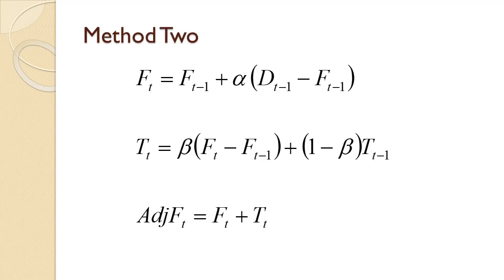With Method 2, the forecast and trend are both smoothed separately — thus the double exponential smoothing — and then summed. The equations are shown on the slide. As I have said before, review the two approaches and pick the one that is used by your textbook. Feel free to ignore the other one.